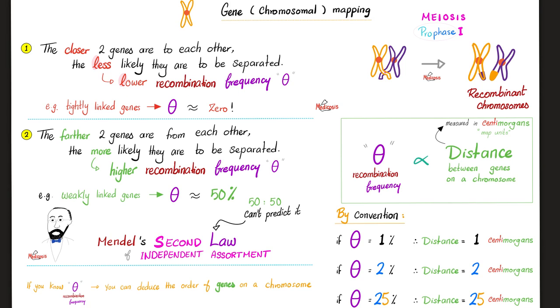And therefore, they are less likely to be separated because they are hugging each other, so to speak. Which means they are less likely to separate, which means less likely to have recombination, i.e. lower recombination frequency, theta. Put differently, when they are hugging each other, when they are linked genes, they will have a very low recombination frequency, almost zero.